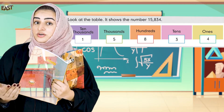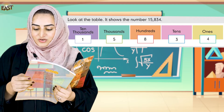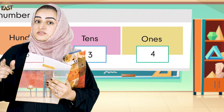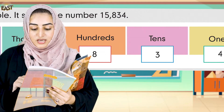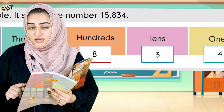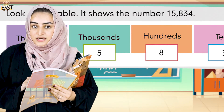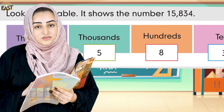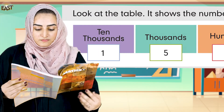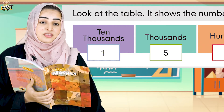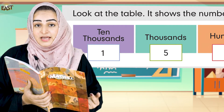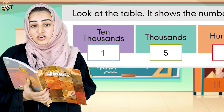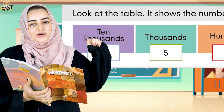So what will be the value of what we are actually studying today? We will see the value. Four at ones place has its value four. Three at tens place — it's not actually three, it's thirty. Eight at hundreds place is not actually eight, it's eight hundred. Five in thousands — five is not actually five but five thousand. One is not actually one but ten thousand.